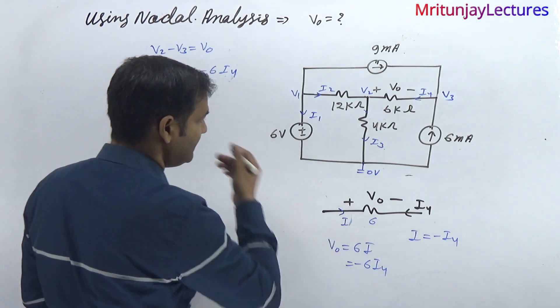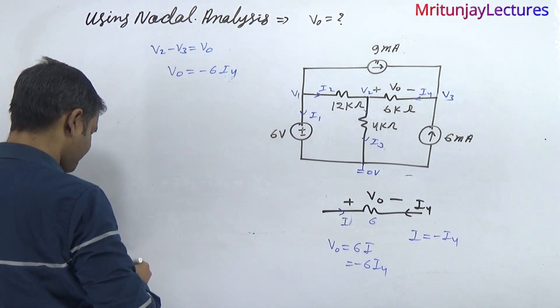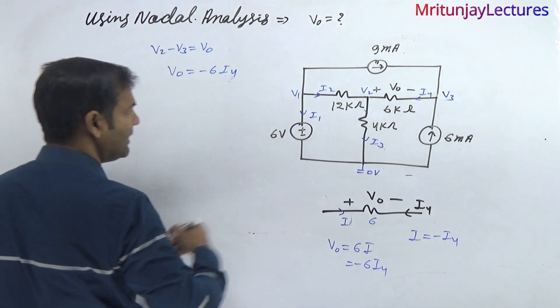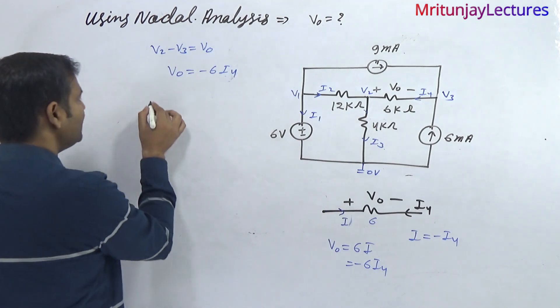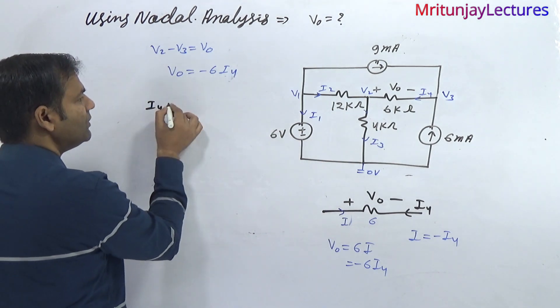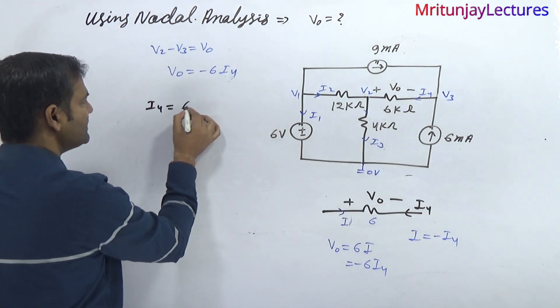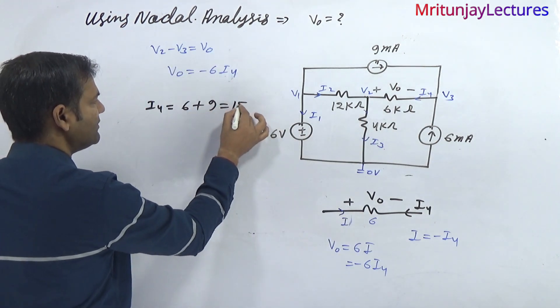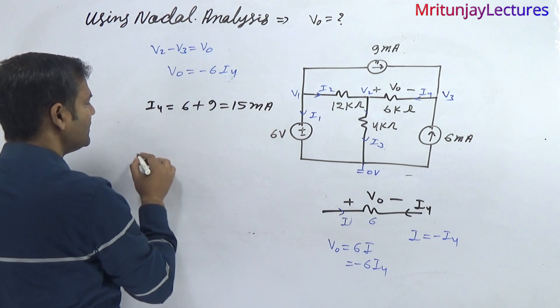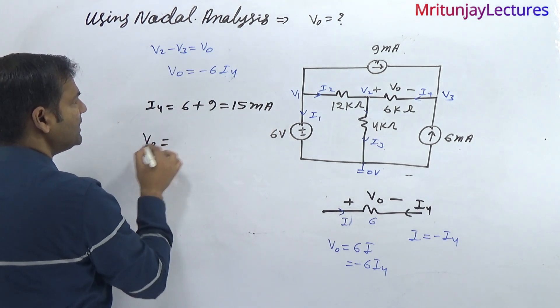Now, if we determine I4, we get the result. Apply KCL at that node. I4 incoming current: 6 plus 9 equals minus 15 milliamperes. So V naught equals minus 6 times I4, which is 15.